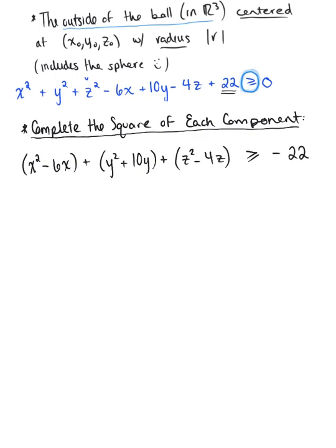And now don't get nervous about that negative. We still have to complete the square. In order to do that, we need to identify the constant coefficient on each variable of degree 1. So for x, that's going to be negative 6. For y, that's going to be positive 10. And for z, that'll be negative 4.